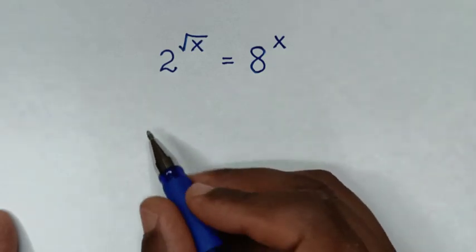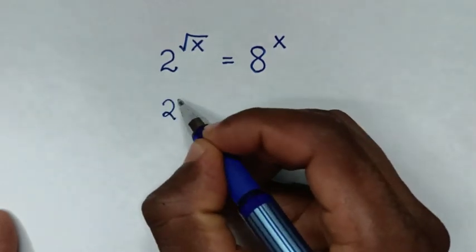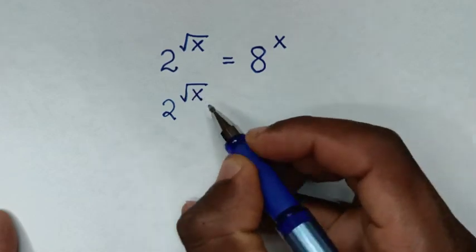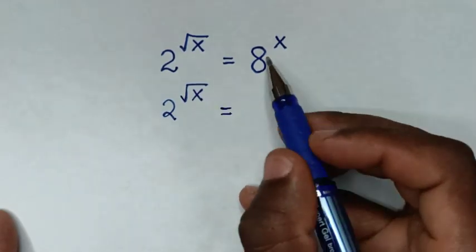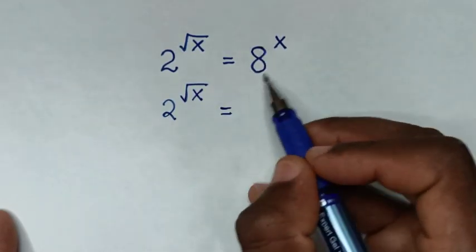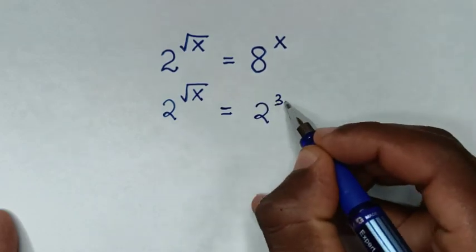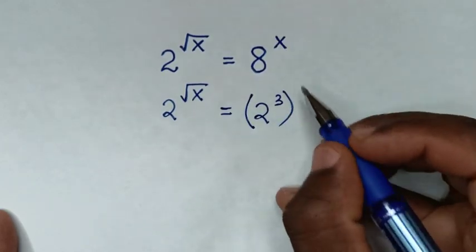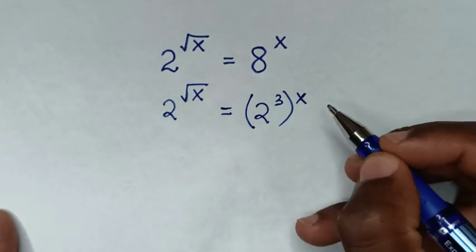Now in the first step, it will be 2 power of square root of x is equal to, from this 8 to base of 2, 8 is same as 2 power of 3, then bracket power of x outside the bracket.